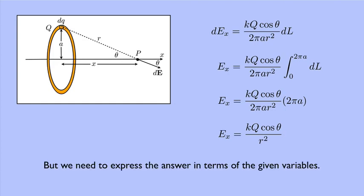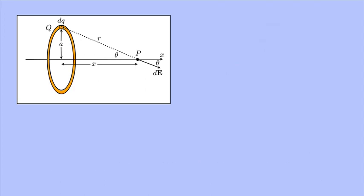But we're not done. We need to express the answer in terms of the given variables. Okay, so E equals k q cosine theta over r squared. If you look at the diagram, there's a triangle that I can make. Here's the angle theta. Here's r, here's x, and here's a.